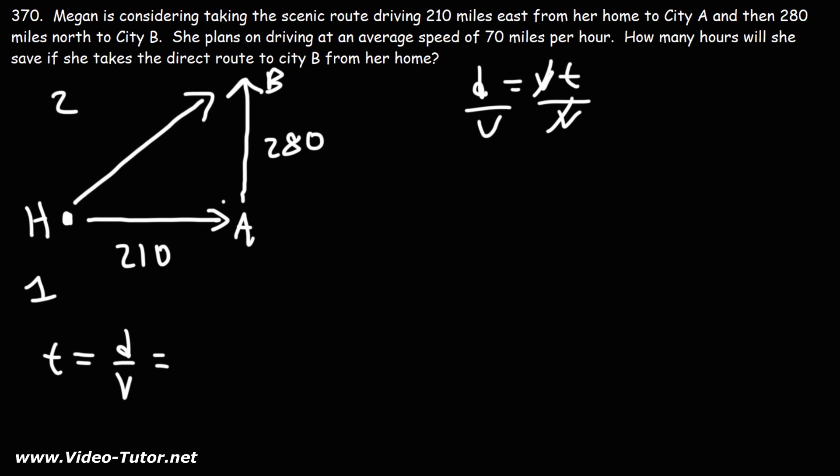If she travels through route 1, the total distance will be 210 plus 280. So she's going to travel a distance of 490 miles at an average speed of 70 miles per hour.